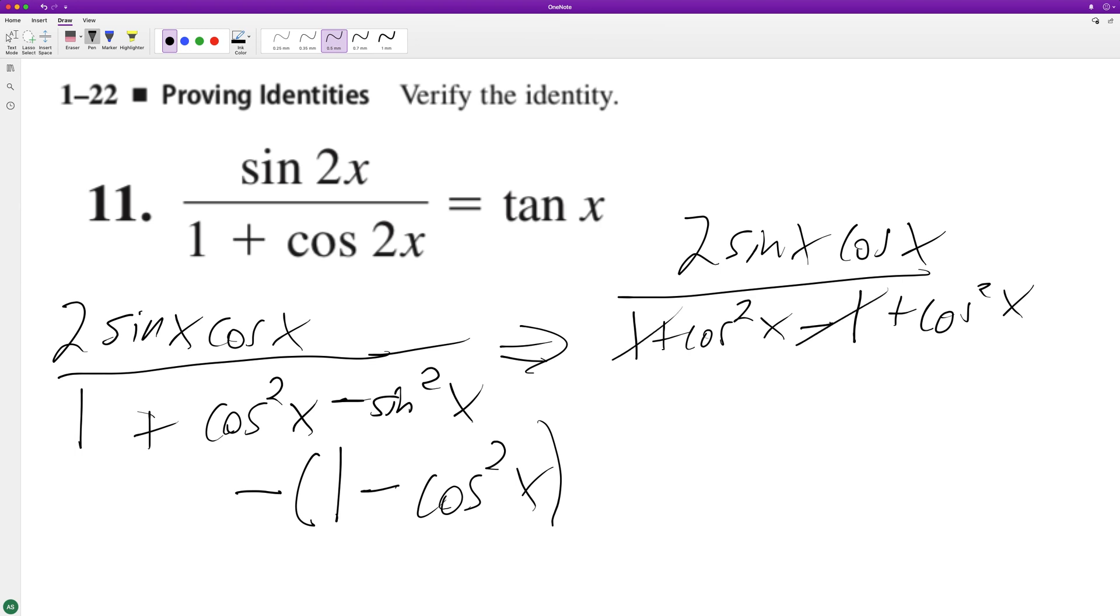So, the ones cancel off. We're left with two sine x cosine x all over two cosine squared x. Two's cancel out, and this cosine on the bottom cancels this out, and we're left with just cosine x.